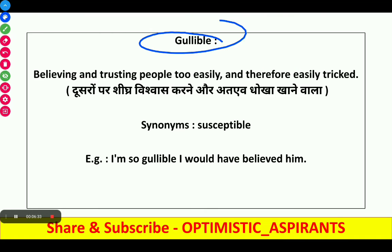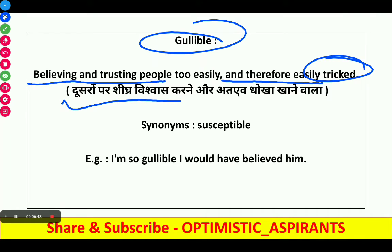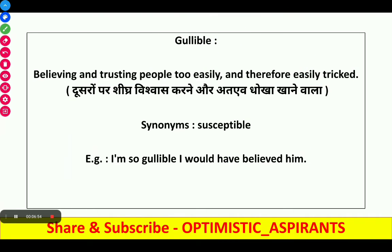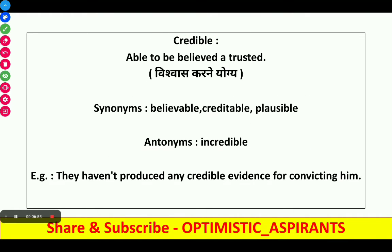Next word is gullible. It means believing and trusting people too easily and therefore being easily tricked. In Hindi it is 'jaldi vishwas karne aur dhokha khane waala'. Synonyms are susceptible and over-believable. Example: 'I am so gullible I would have believed him.'